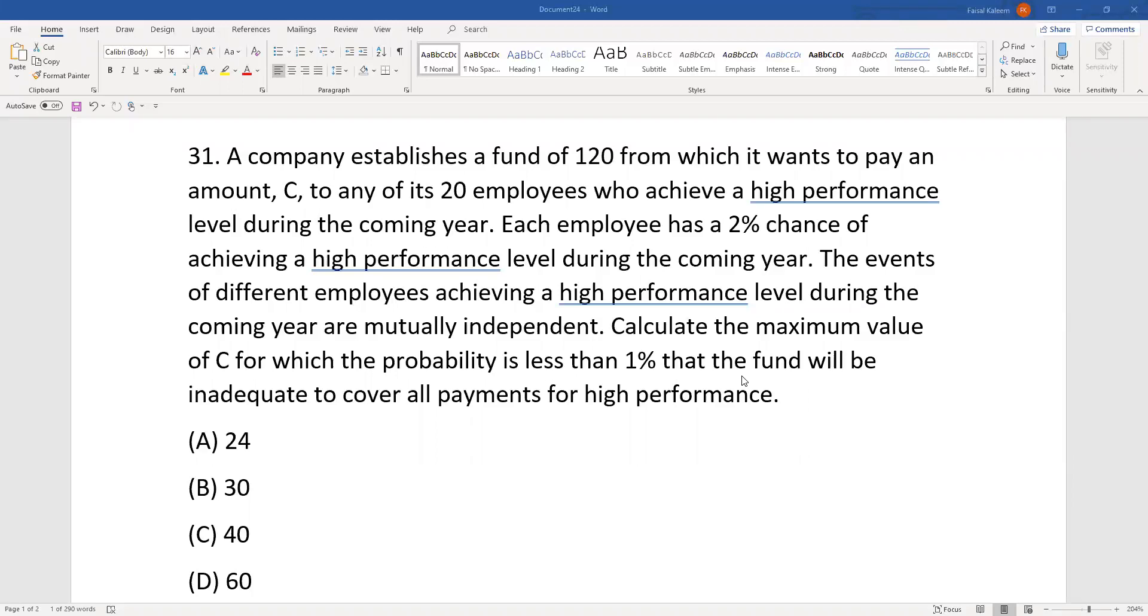Now the probability of inadequacy of funds to be less than 1% means that the probability of adequacy of funds is greater than 99%, and we want to maximize C given the limit that the total reward is 120. C's the reward per person, and therefore to maximize C we would like to minimize X, but at the same time we have to keep in mind that whichever employee qualifies has to be given the reward, so we can't just select the minimum value of X which would be one.